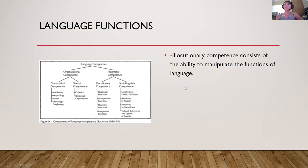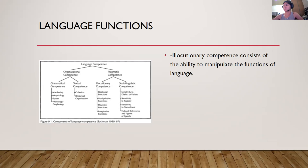Illocutionary competence consists of the ability to manipulate the functions of language. Functions are essentially the purposes that we accomplish with language, such as stating, requesting, responding, greeting, parting, and so on. Functions cannot be accomplished without the forms of language, like morphemes, words, grammar rules, discourse rules, and other organizational competencies. While forms are the outward manifestation of language, functions are the realizations of those forms.